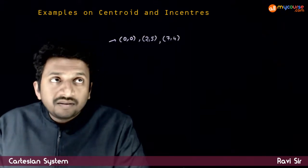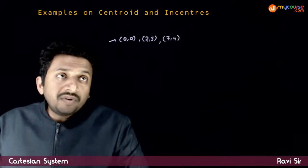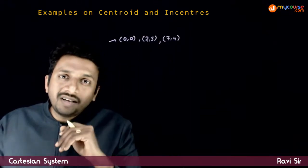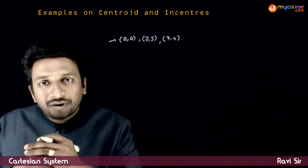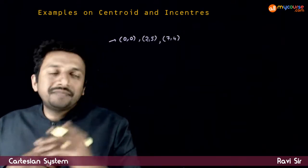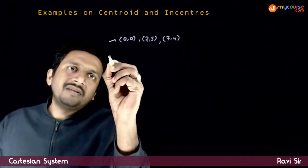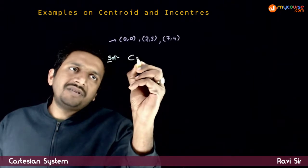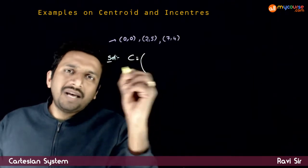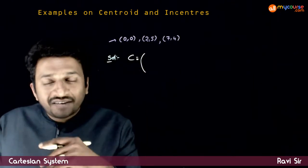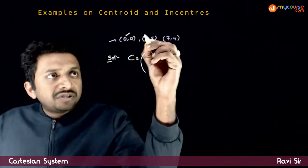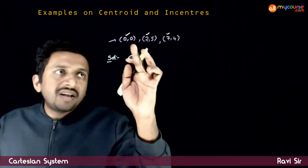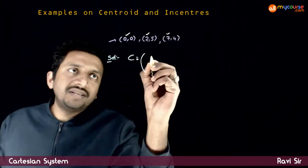In this example, you are given the three vertices of a triangle and you are asked to find the centroid of the triangle. The centroid of the triangle is given by the average of the x-coordinates and the average of the y-coordinates.